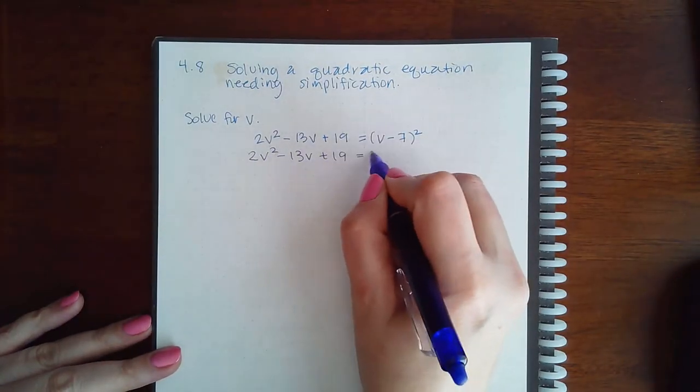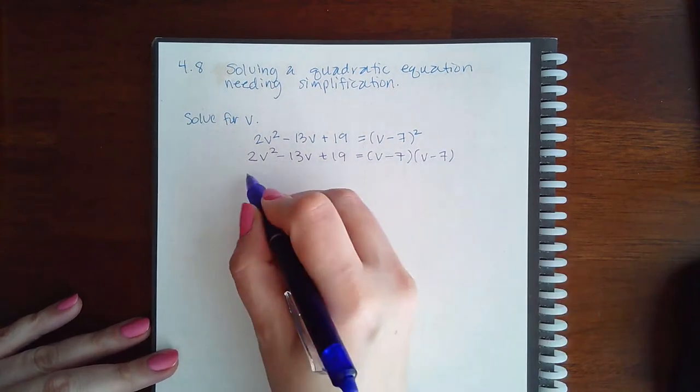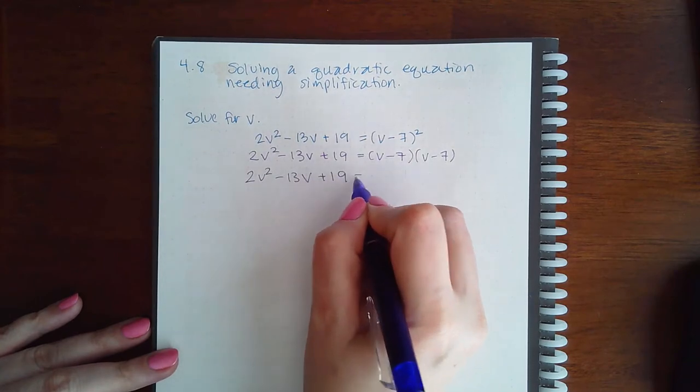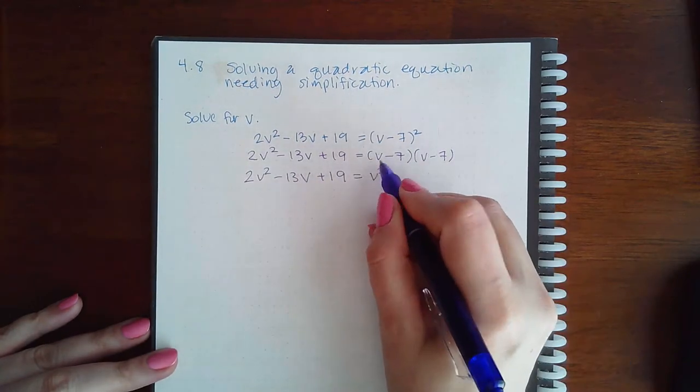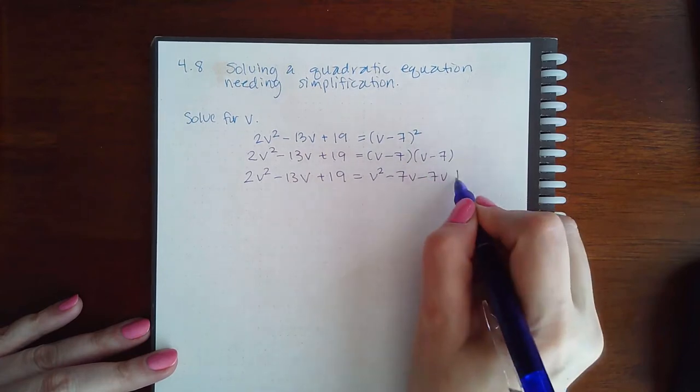That is the same as doing v minus 7 times v minus 7. We get 2v² + 13v + 19. Here, I will get v² - 7v - 7v + 49.